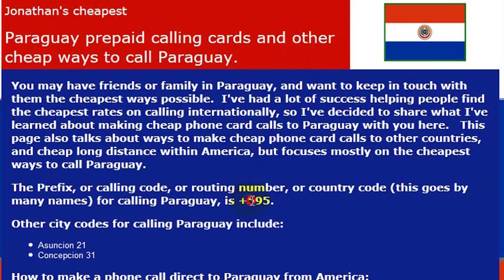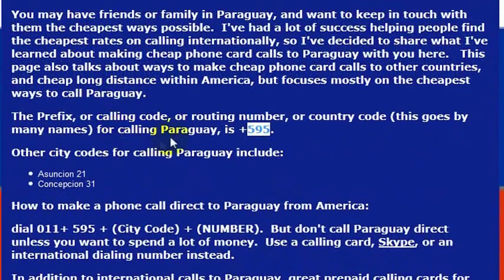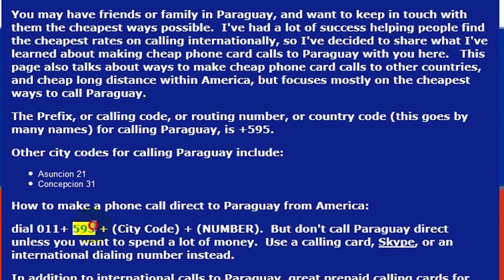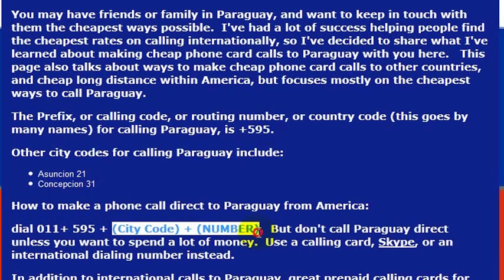When I go, I'm going to want to call and make my travel arrangements, and I'm going to want to know the country code in order to make that phone call. The country code is 595, so if I'm dialing the country directly, I would want to dial 011, then 595 to reach the country. Then I would dial the city code and then the number to reach the number that I wanted to reach.